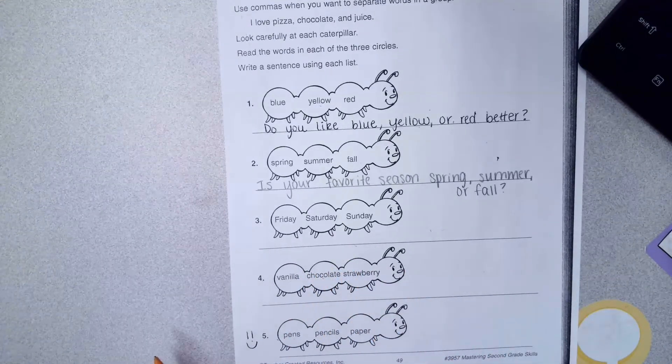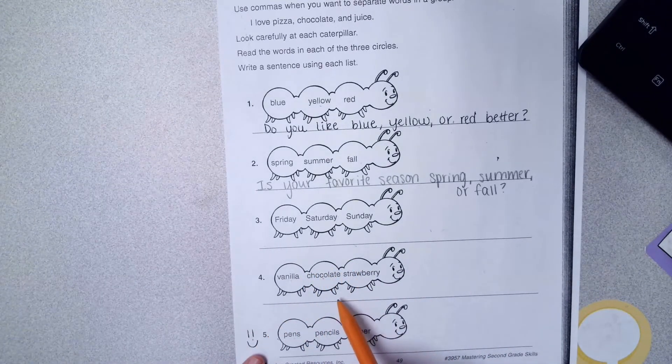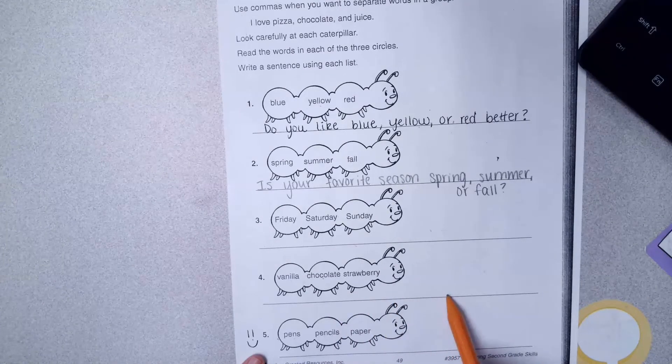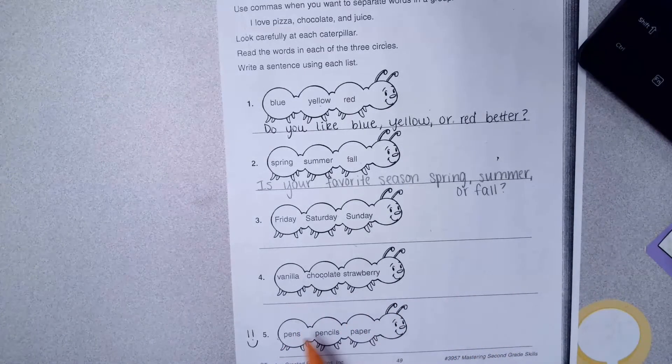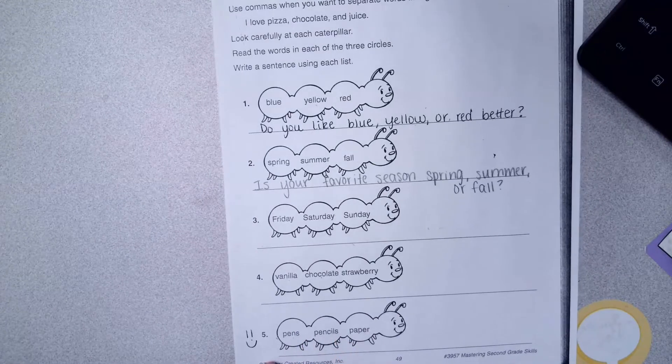And then vanilla, chocolate, and strawberry. 'I love ice cream. The flavors are vanilla, chocolate, and strawberry,' or whatever. And then the last one: pens, pencils, paper. When do you need those?